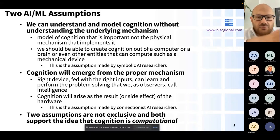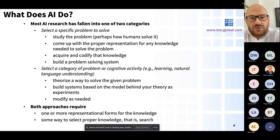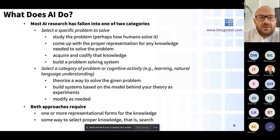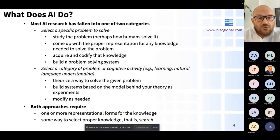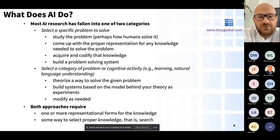AI research generally falls into two categories: selecting a specific problem to solve - cognitive activities like learning, natural language understanding, pattern analysis - or studying how humans solve a problem and then building algorithms that accurately represent the knowledge required to solve it and make predictions. For example, regression or neural networks allow you to incorporate knowledge and make predictions based on what you supply to the system.